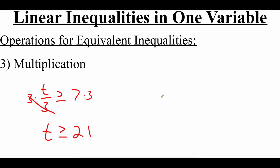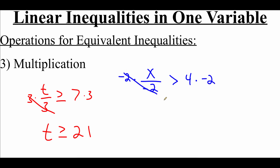One thing we have to be careful about when doing multiplication is if we multiply by a negative number. For example, if we had x over negative two is greater than four, to get rid of the divided by negative two we're going to multiply by negative two on each side. When we multiply by a negative number, we have to flip our inequality symbol around. So right now it says greater than, but we flip it to a less than symbol, and we get x is less than negative eight as our answer.